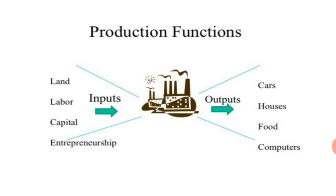When it comes to average product, we symbolize it as AP. Average product is nothing but total product divided by the variable input. The formula for average product is TPL divided by L, that is labor. Average product is defined as the output per unit of the variable input.